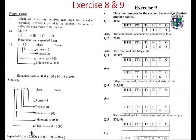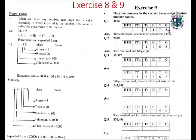Exercise nine: place the number in the correct boxes and write their number name. 3,176. 3,174.